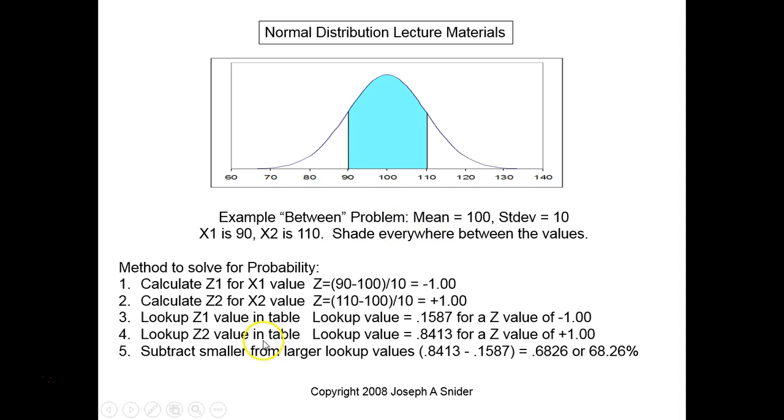You're calculating the Z value for 90, the Z value for 110. That's the first two steps there: minus one and plus one when you calculate it out. Then you're looking them up in the table.